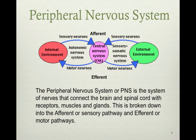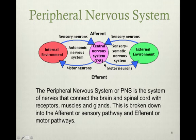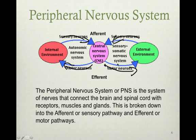In the peripheral nervous system, we have an input and essentially an output. The efferent, or exit pathway, exits out of the central nervous system. The afferent, or sensory neurons, input into the central nervous system.